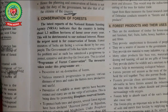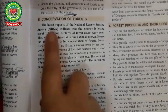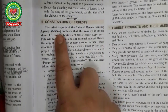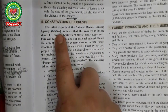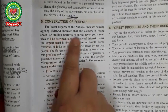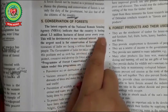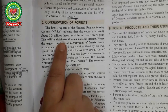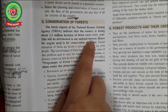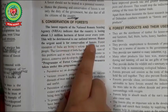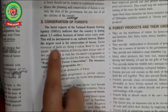The main objectives of the program are to use wasteland to produce firewood, food, and timber for the use of rural people. The latest reports of the National Remote Sensing Agency (NRSA), headquartered in Hyderabad, indicate that the country is losing about 1.3 hectares of forest cover every year. This will be detrimental — detrimental means causing harm — to our national interest.